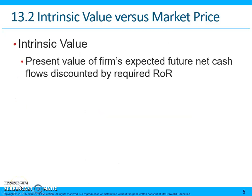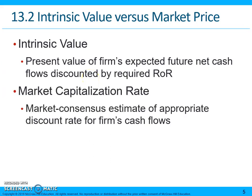Intrinsic value represents the present value of a firm's expected future net cash flows discounted by the required rate of return. Market capitalization rate is just another name for the required rate of return — it's a market consensus estimate of the appropriate discount rate for a firm's cash flows. Note that the book formulas use k, while I will use r; k and r are interchangeable.